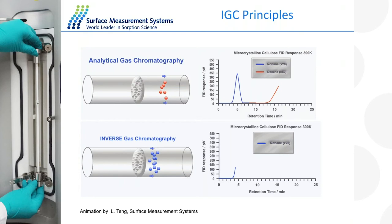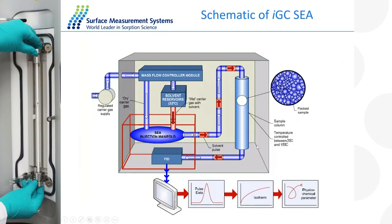Describing the instrument setup in more detail: the column is packed with your powders, fibres, or films. Like any normal gas chromatograph, we use a helium or nitrogen carrier gas passing through the column. We inject different gas-phase species — hydrocarbons like octane or decane, alcohols like methanol or ethanol, or more acidic samples such as acetic acid or basic materials like amines. A flame ionisation detector at the end measures the time of flight — how long it takes for the molecules to pass through the column — and from the chromatographic data an isotherm and then a physiochemical property is obtained.